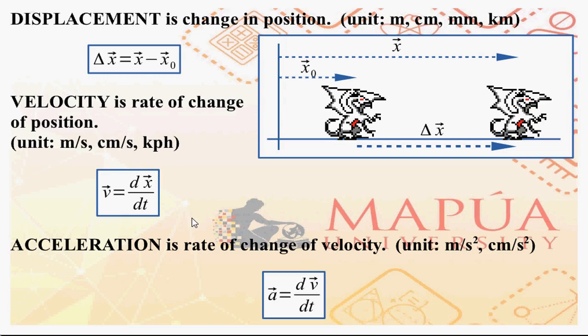Motion along a straight line — or basically what we refer to as kinematics — is the study of motion relating displacement, velocity, acceleration, and time. Kinematics is the study of the motion of an object, basically looking at how the change in position of the object is related with respect to time, along with velocity and acceleration.